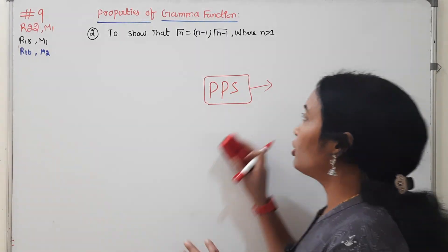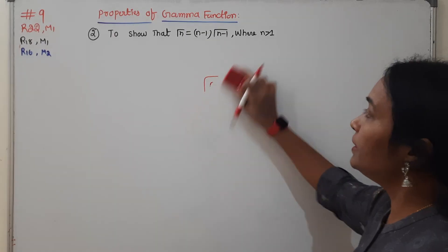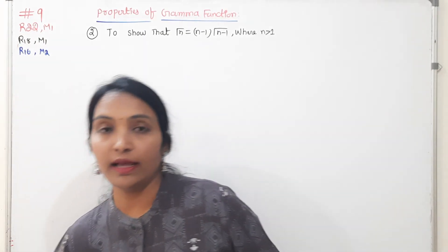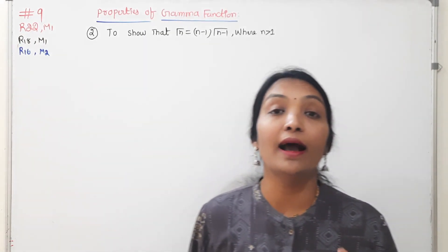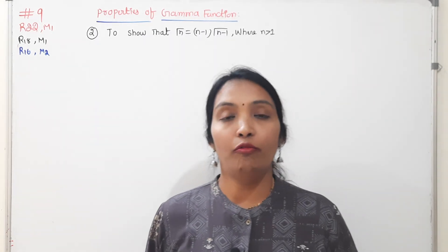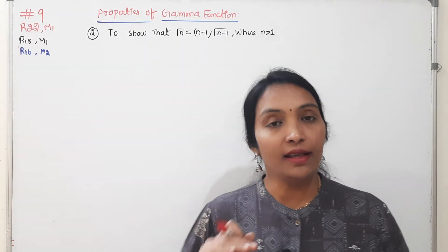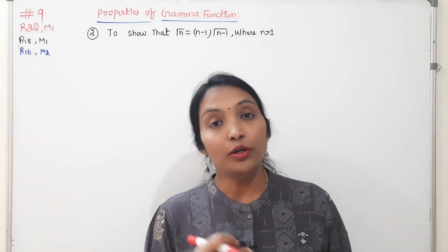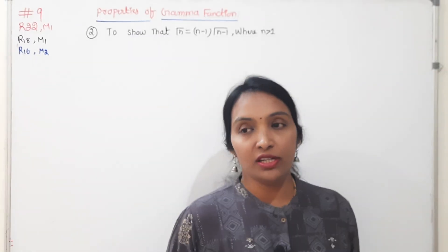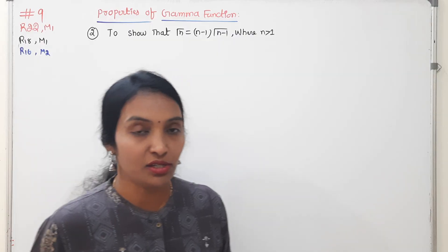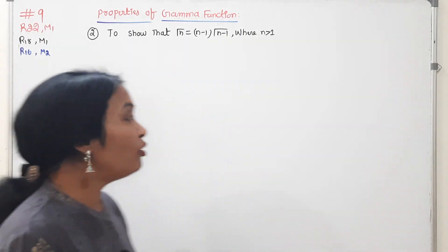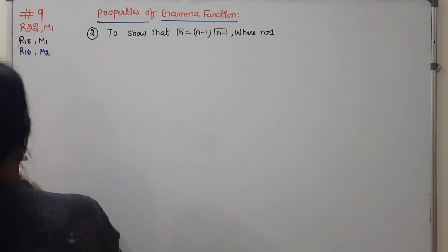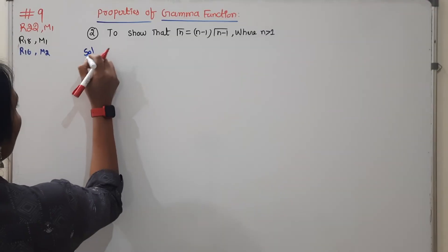Today our topic is: what is the first property we will prove in this class? Gamma of 1 is equal to 1. First of all, gamma is a single-variable function and beta is a two-variable function. We will first discuss gamma — what is our gamma definition? Write down the gamma definition.